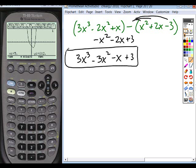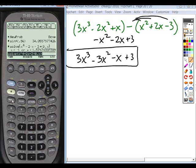Now again, the nice thing using your calculators, all of this can be done for you. So if you just write down exactly what you have, 3x³ minus 2x² plus x, and we're going to subtract that from the quantity x² plus 2x minus 3.